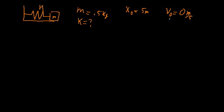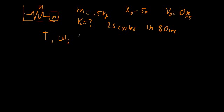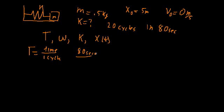Now, let's say we observe that the system completes 20 cycles of oscillation in 80 seconds. We want to find the period, the angular frequency, the stiffness of the spring, and x as a function of time. The period is the time for one cycle, so 80 seconds divided by 20 cycles gives a period of 4 seconds per cycle, or just 4 seconds.